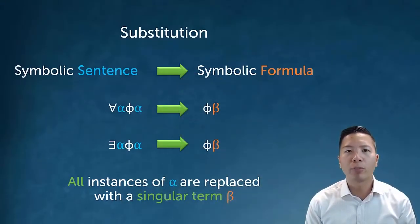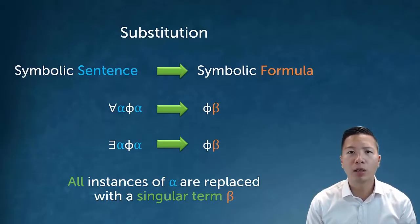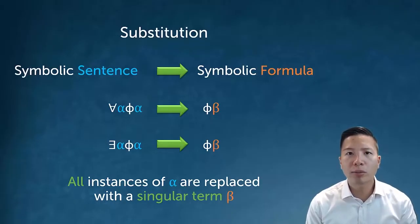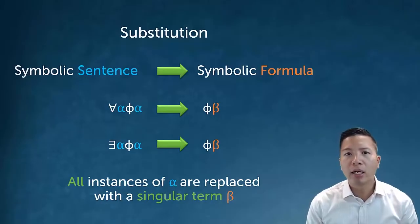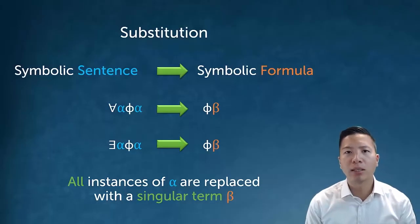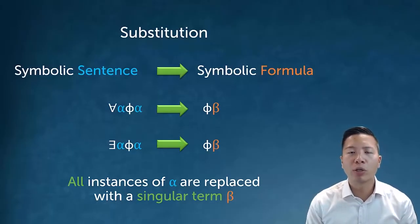The first concept to become comfortable with in predicate logic is substitution. A substitution lets us move from a symbolic sentence to a symbolic formula. For example, if I have 'for all alpha, phi alpha,' I can do a substitution and change alpha to beta. When you do a substitution, you drop the quantifier. Beta is just some singular term, and a substitution is where you replace a bound variable with a free one — and this concept is extremely important moving on.